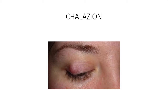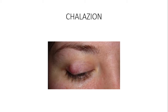If warm compresses don't help, you can go for surgical excision — we call it incision and curettage. You turn the eyelid inside out, make a small incision, and then do curettage of the lipid within the tarsal plate, after which the patient will be free of the deformity.